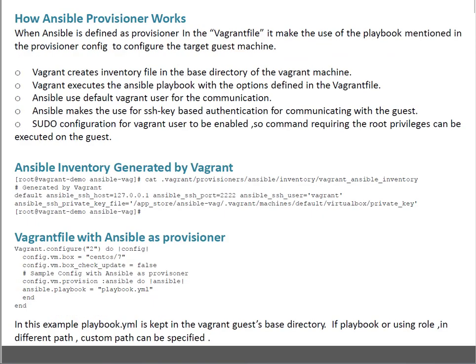So next, how does the Ansible Provisioner work? When Ansible is defined as provisioner in the Vagrant file, it makes use of the playbook mentioned in the provisioner config to configure the target machine. Whatever playbook you specify in the Vagrant file, Vagrant executes that Ansible playbook on the guest machine. First, Vagrant creates an inventory file in the base directory of the Vagrant machine. When you run vagrant init with all the required configuration and specify Ansible as provisioner, when you first boot up that machine using vagrant up, it automatically creates a directory in the base directory of the Vagrant guest machine which contains an inventory file.